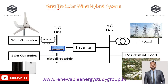In the solar wind hybrid system, on one side we have a solar power plant designed based upon the consumer requirement, measured in kilowatts. We also have a wind turbine or wind generation machine, which rotates and generates electricity based on the wind velocity and kinetic energy absorption, also measured in kilowatts. When connecting both, we require a solar wind hybrid controller, which is very important before connecting the electricity supply to the inverter.